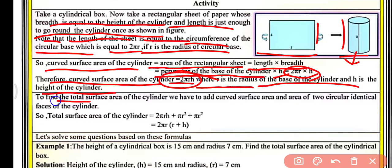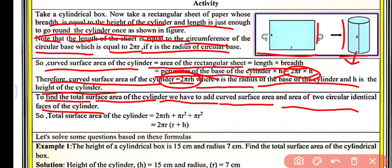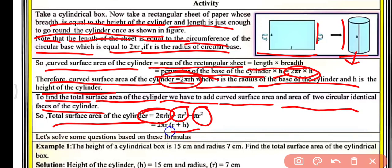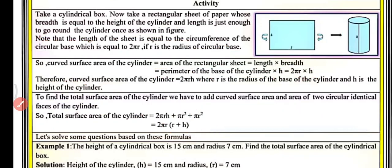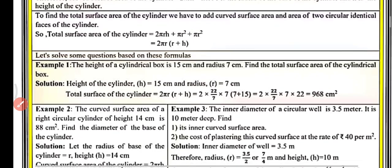To find the total surface area of the cylinder, we add the curved surface area and the areas of the two identical circular faces — the top and bottom. So total surface area equals 2πrh + πr² + πr². Taking 2πr common, we get total surface area equals 2πr(r + h). This is the total surface area formula for a cylinder.